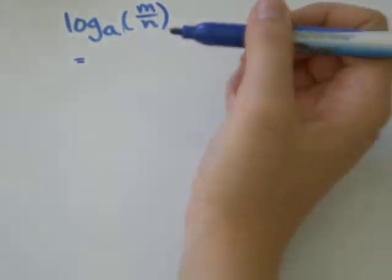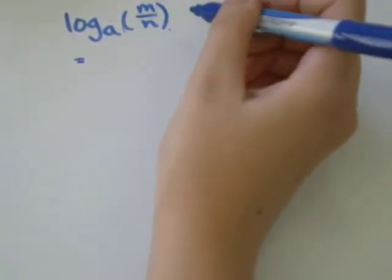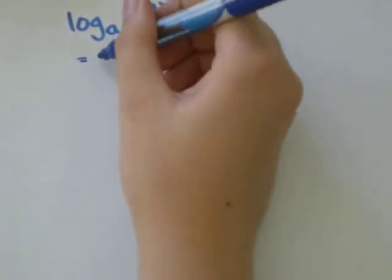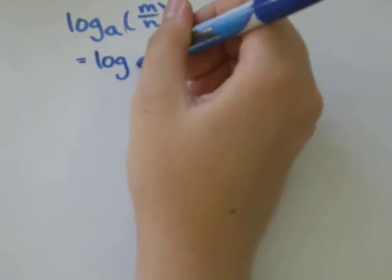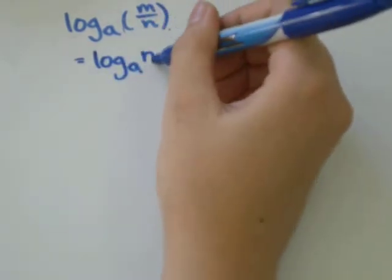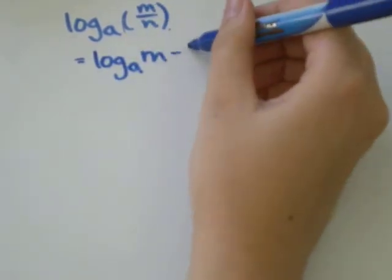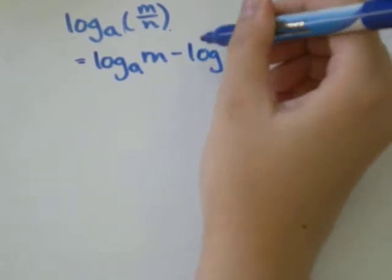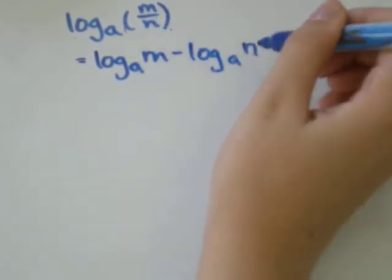The rule says that log base a of something divided by something equals log of the same base of whatever's on top minus log of the same base of whatever's on the bottom.